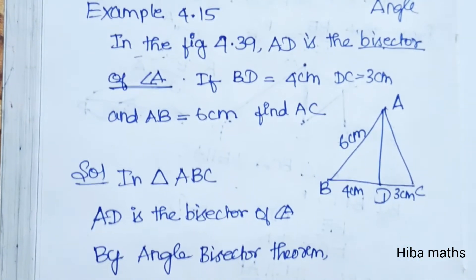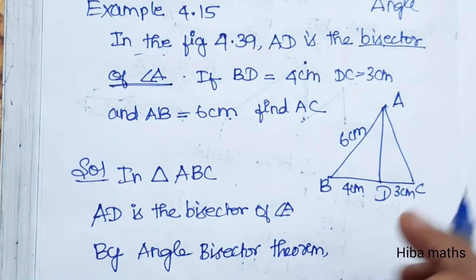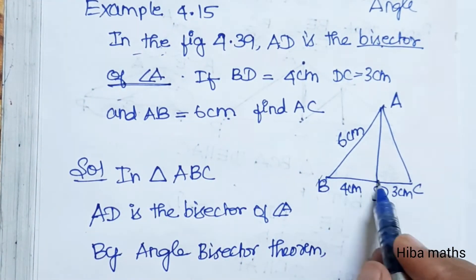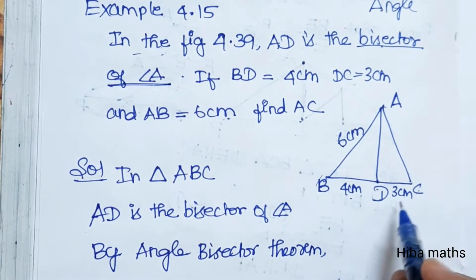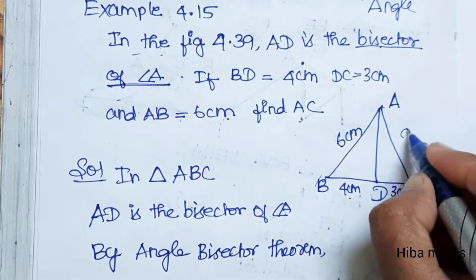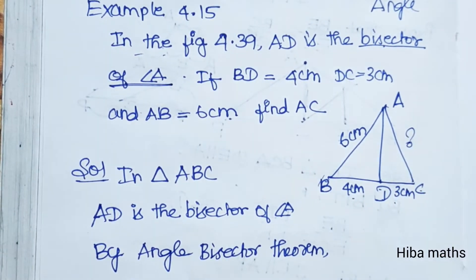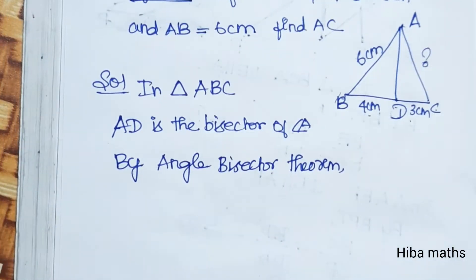If you look at the diagram, AB is 6, BD is 4, DC is 3, and AC is the unknown we need to find.